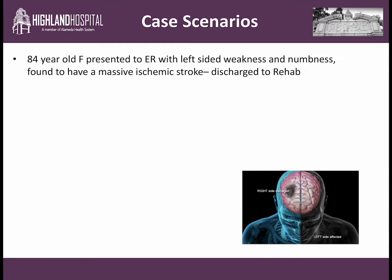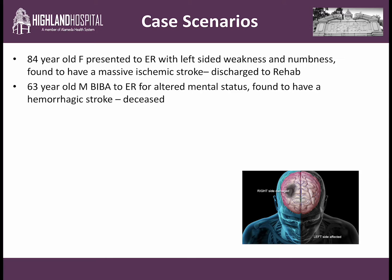An 84-year-old female presented to the emergency room with left-sided weakness and numbness. She was found to have a massive ischemic stroke. After receiving appropriate therapy she was discharged to a rehabilitation facility. On the flip side, a 63-year-old male was brought in by ambulance after he was found altered at home. He was found to have a hemorrhagic stroke and despite medical intervention he unfortunately passed away.